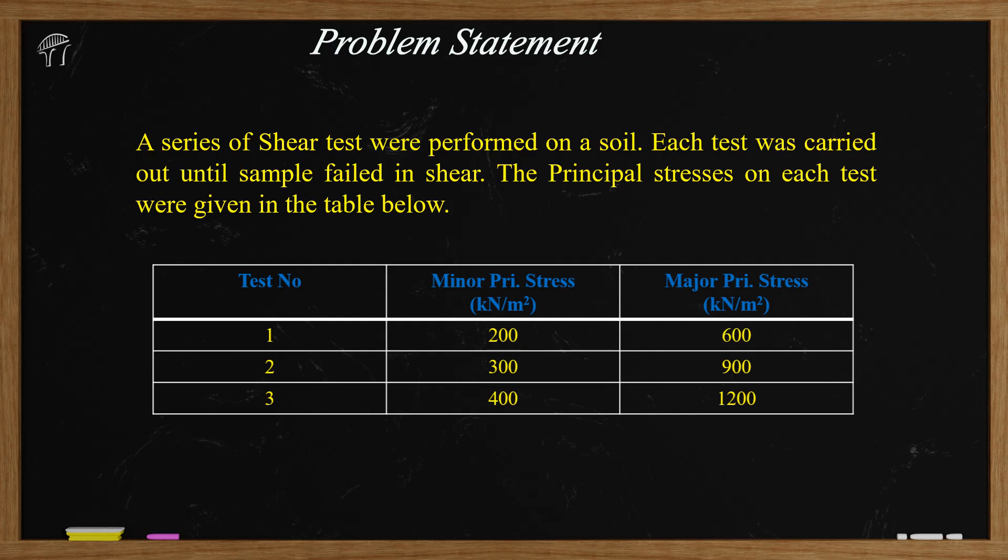We have been asked to determine values of C and phi and also plot the Mohr circle and determine the shear strength envelope. What this shear strength envelope is we will see later on. But before we go ahead and draw the Mohr circle we need to understand some basics of the Mohr circle.